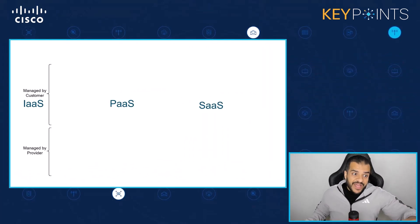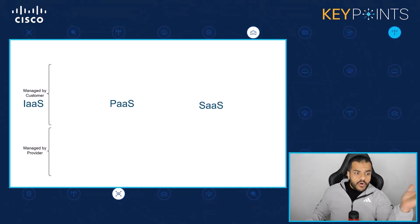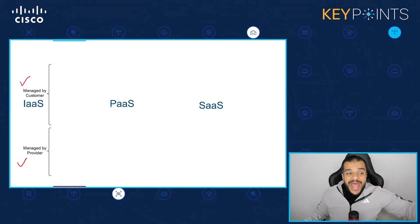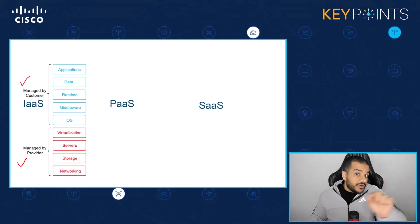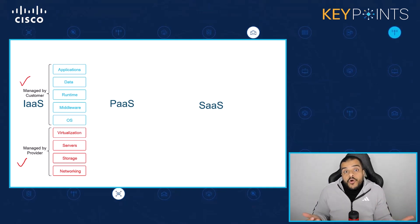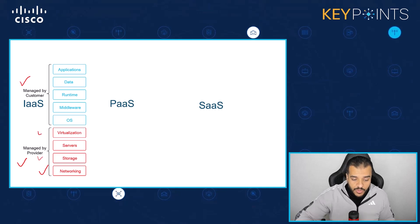If we split the workload, we're going to find out that — whether you're a customer or a service provider — the service provider is actually managing the infrastructure for their customers, whereas customers need to worry about their own operating system, their own applications and data. The infrastructure resources managed by the provider include networking, storage, servers, and virtualization, whereas the customer just needs to worry about applications, operating system, middleware, and runtime.